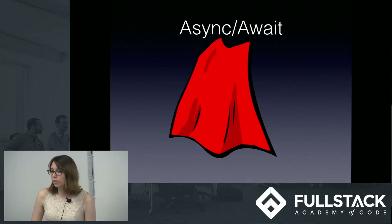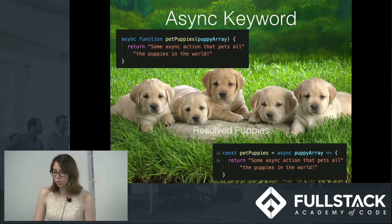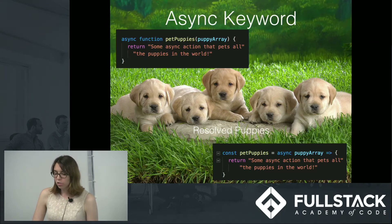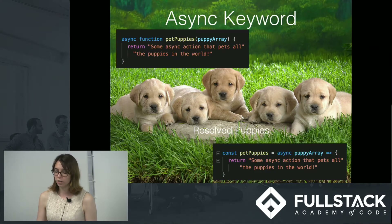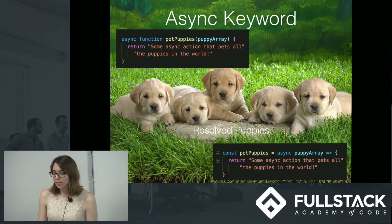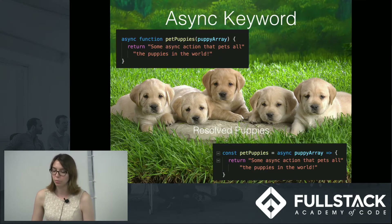Let's take this one step at a time. First, we have our async keyword. The async keyword is put in front of a function to denote that it is asynchronous, and it will automatically return a promise. The function setup is basically the same — you're just adding the async keyword in front of the function keyword, as you can see in the top example. And if you're using ES6 arrow functions, then you just have to put the async keyword in front of the parameters or lack thereof, as you can see in the bottom example here.